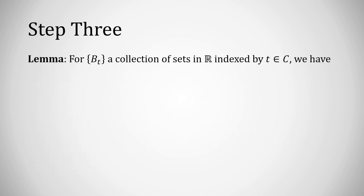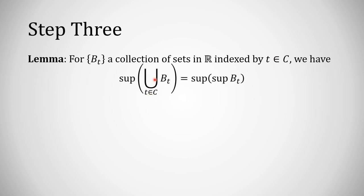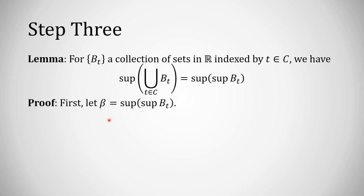Step three — the set theory comes in. Suppose you have subsets B_t of the real numbers indexed by some totally arbitrary set C. Then the supremum of the grand union of all these subsets equals the supremum of the set of individual supremums of the B_t's. I'll denote beta as the supremum of all the individual supremums — so beta is the supremum of the supremums.